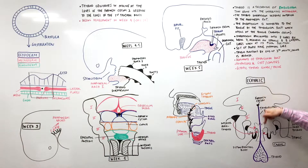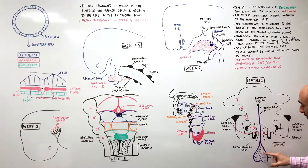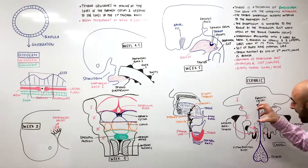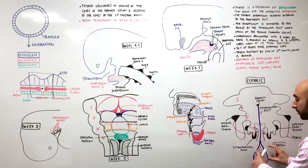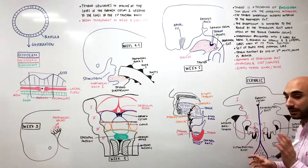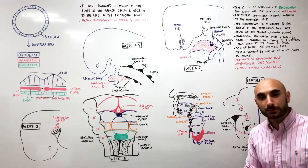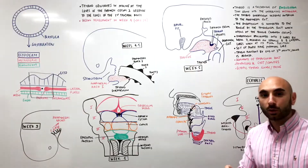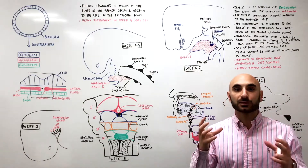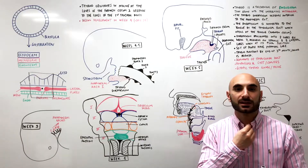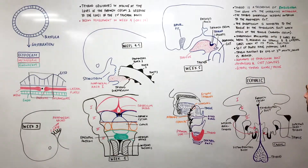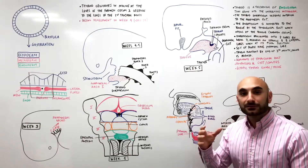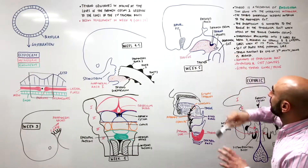As the thyroid moves down from the foramen cecum to its final position in front of the trachea, it proliferates. This proliferation causes the mass of cells to become two thyroid lobes — the left and the right. In fifty percent of people, an extra lobe called the pyramidal lobe will also be evident. In its final position it'll also have grown an isthmus, which connects the left and right lobes. The pyramidal lobe is at the midline in fifty percent of people.